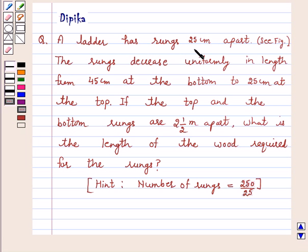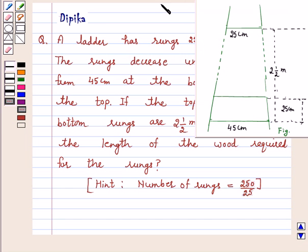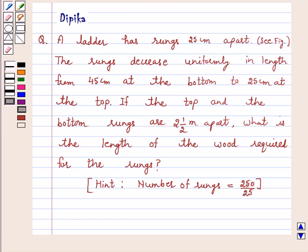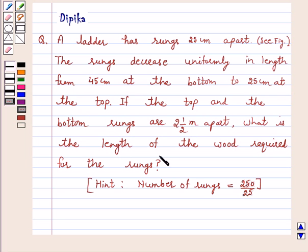A ladder has rungs 25 cm apart. See figure. The rungs decrease uniformly in length from 45 cm at the bottom to 25 cm at the top. If the top and the bottom rungs are 2 and a half meters apart, what is the length of the wood required for the rungs?